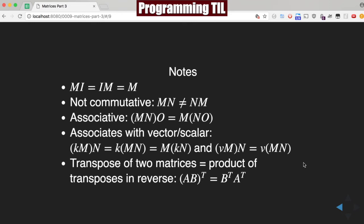And a last interesting note is the transpose of two matrices is equal to the product of the transposes in reverse. So AB and then take the transpose of that is equal to B transpose times A transpose.